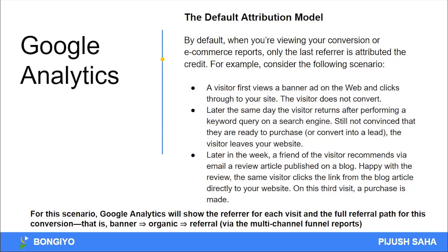We have to ask: there are three touchpoints on our website. Google Analytics will show the referral for this visit and the potential referral path for this conversion — there is a banner, there is organic, and there is a referral. This total process is called the Multi-channel Funnel, which we will look at in Universal Analytics. We have last-click attribution available. If you have last-click attribution, the referral gets the credit directly. Google Analytics has multiple attribution models.